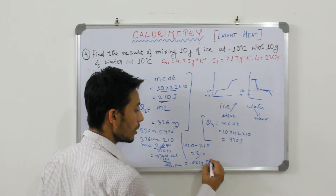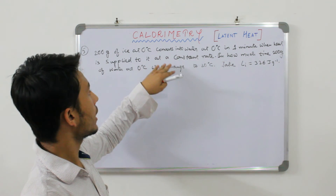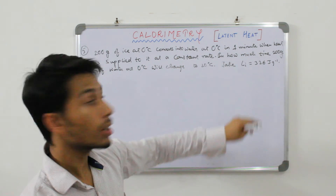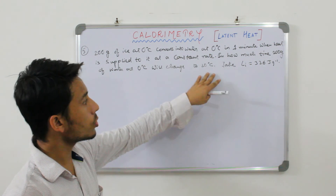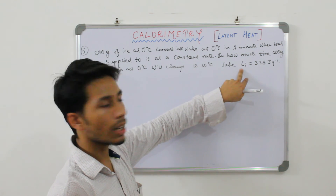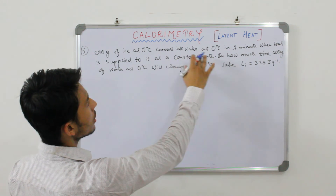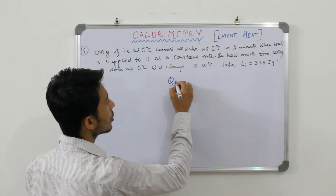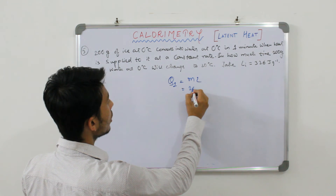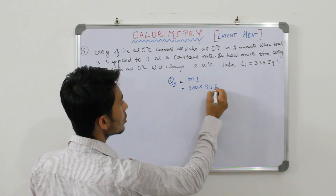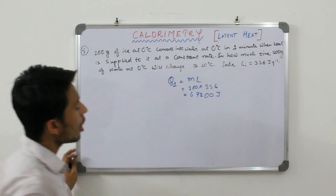Moving on to the last problem: 200 grams of ice at 0 degrees centigrade converts into water at 0 degrees centigrade in one minute when heat is applied at a constant rate. The heat required is Q1 = ML = 200 × 336 = 67200 joule.